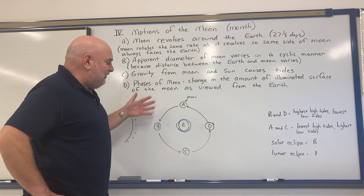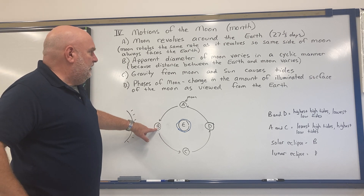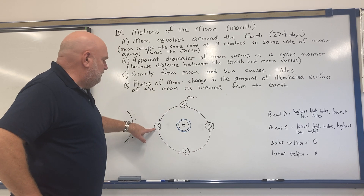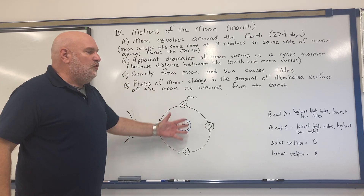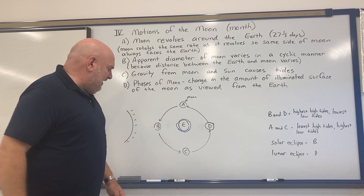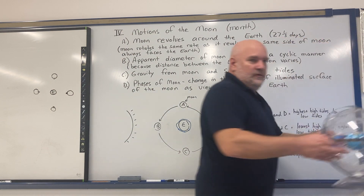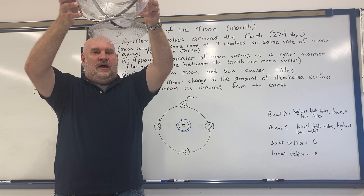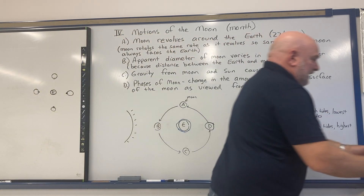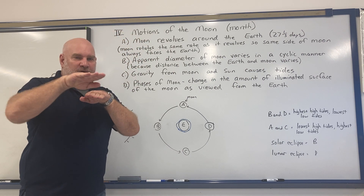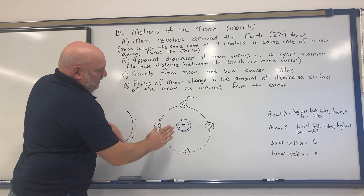A common misconception when looking at this diagram is: if that's where the moon is during a solar eclipse and it takes a month for the moon to go around the Earth, shouldn't we have a solar eclipse every month? Well, this is only a two-dimensional diagram — there are also factors in the third dimension. Like right now this object is between me and the camera but I can still see the camera; only when it's lined up exactly will it block the camera. It's only when things are lined up properly in all dimensions that you get an eclipse.